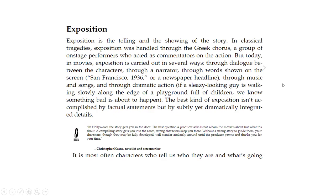Exposition is the telling and the showing of the story. In classical tragedies, exposition was handled through the Greek chorus — a group of onstage performers who acted as commentators on the action. But today in movies, exposition is carried out in several ways: through dialogue between the characters, through a narrator speaking in first person, through words shown on the screen — for example 'San Francisco, 1936' or 'Tokyo, 1972.'